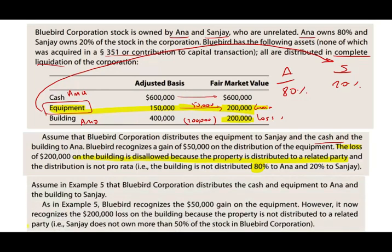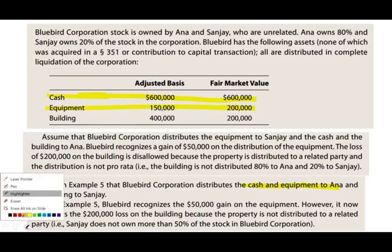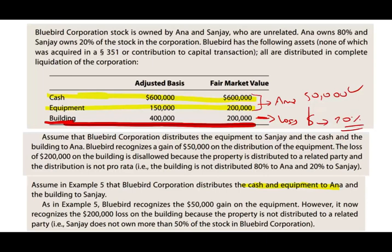Now let's change the scenario. Assume Bluebird distributes cash and equipment to Anna (80%) and the building to S (20%). Bluebird recognizes the $50,000 gain on the equipment distributed to Anna — we always recognize gains. The question is the building loss. Now the corporation can recognize the loss because S is a 20% owner and is not a related party to the company. Therefore we recognize both the gain and the loss under those circumstances.